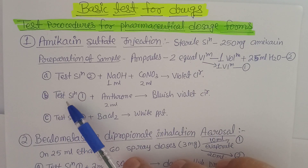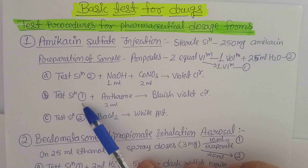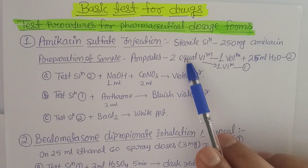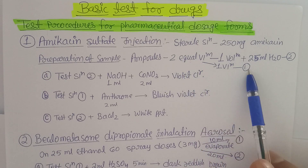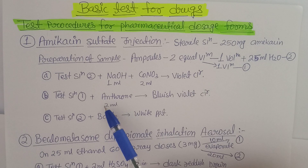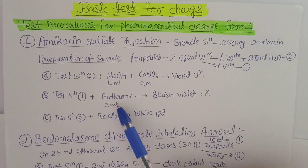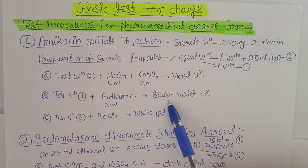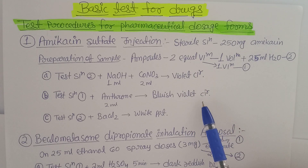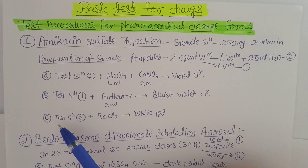For the second test: to Test Sample 1 (first equal volume), add 2 ml of anthrone. This gives a bluish-violet color, confirming the presence of amikacin sulfate.